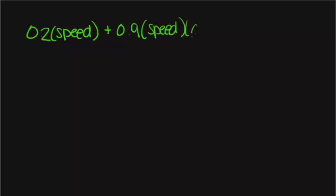Now let's determine how many calories person B will have. We're going to use the equation 0.2 times the speed plus 0.9 times the speed times the grade plus 3.5.